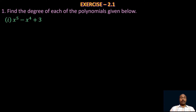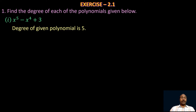The first polynomial is x⁵ − x⁴ + 3. We have three terms. The degree of the first term is 5, the degree of the second term is 4, and the degree of the third term is 0, because 3 can be expressed as 3·x⁰. So the highest degree is 5, and the degree of the given polynomial is 5.